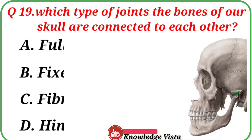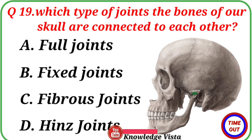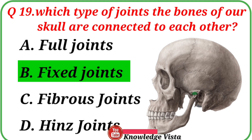Question No. 19: By which type of joints are the bones of our skull connected to each other? Your options are: A. Full joints, B. Fixed joints, C. Fibrous joints, D. Hymns joints. Correct answer is Option B, Fixed joints.